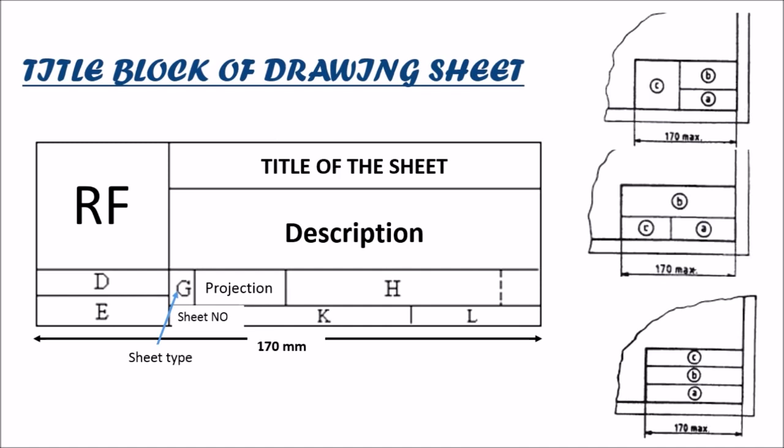Here are the few types of title blocks which could be used on the basis of their orientation and dimensions. The maximum dimension of a title block is on the width side which is 170 mm and on the height-wise it is 20 mm.